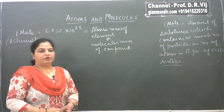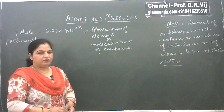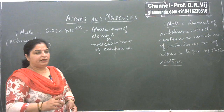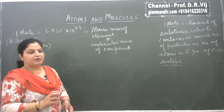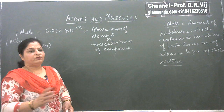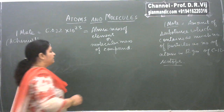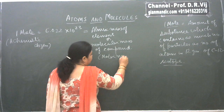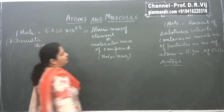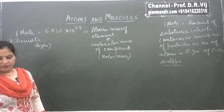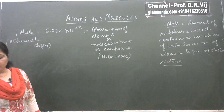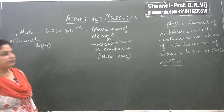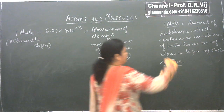Atomic mass of any element or molecular mass of any compound is not the mass of one atom or one molecule. It is basically the mass of one mole of atoms or one mole of molecules. That's why this mass is also known as molar mass. Similarly, you can relate mole or mass to the volumes of gases also.